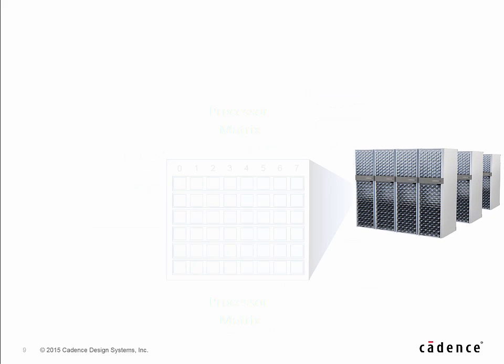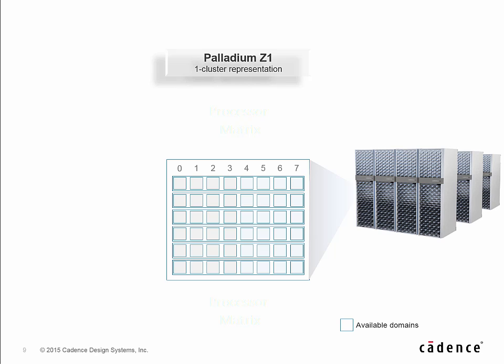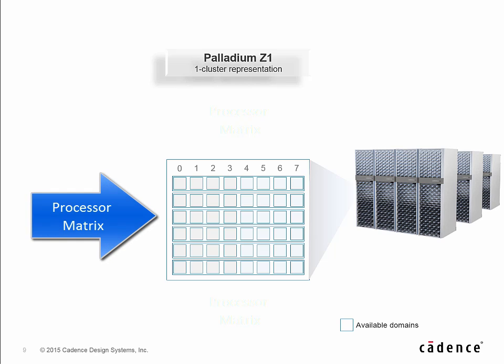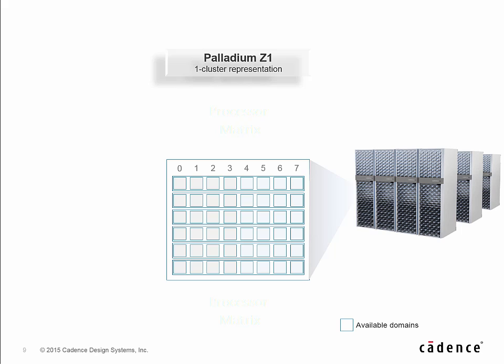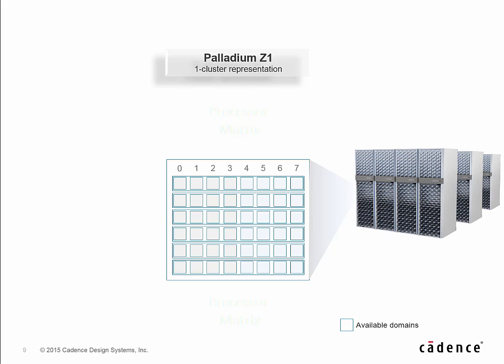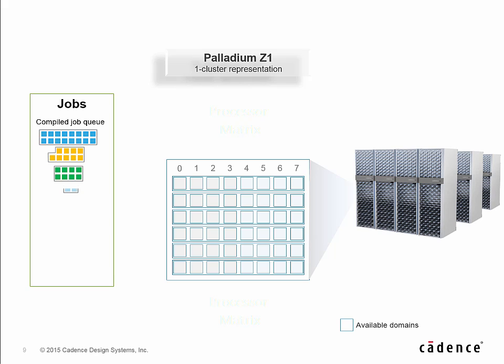So how does this work? Well, this matrix represents an eight by six set of logic domains in Palladium Z1 called a cluster. Each logic domain is essentially a massively parallel set of processing elements, effectively executing 4 million gates of user logic. When a job is compiled for a set of domains on the Palladium Z1 engine, it assumes a certain physical shape. That shape is determined by the domains chosen by the engineer compiling the job.